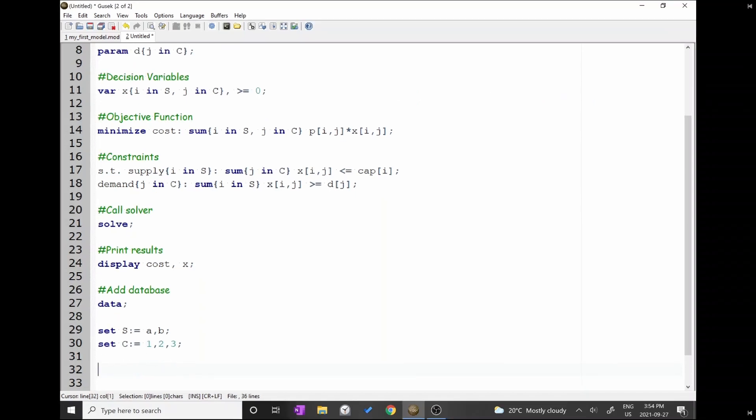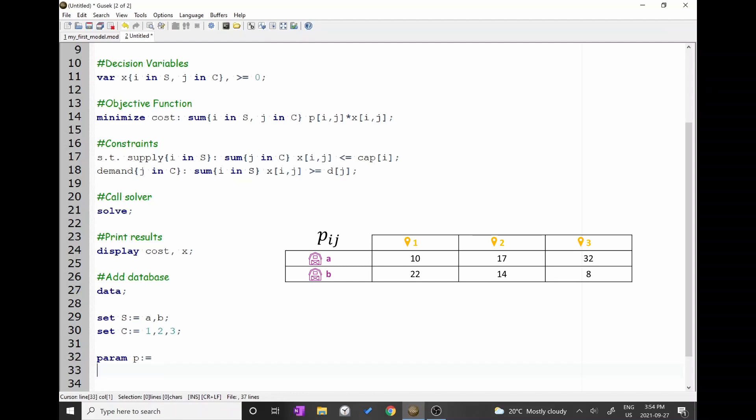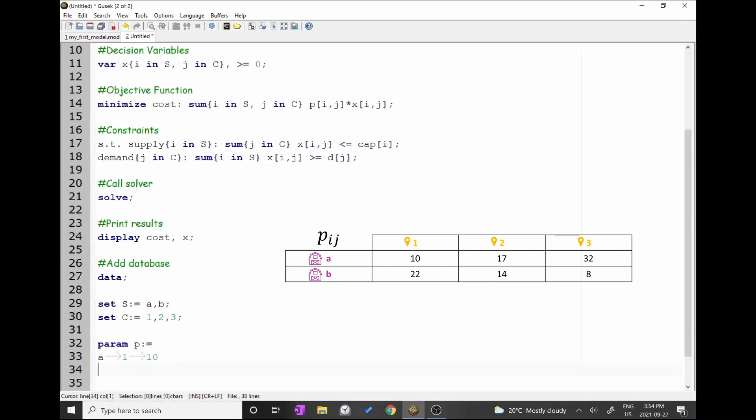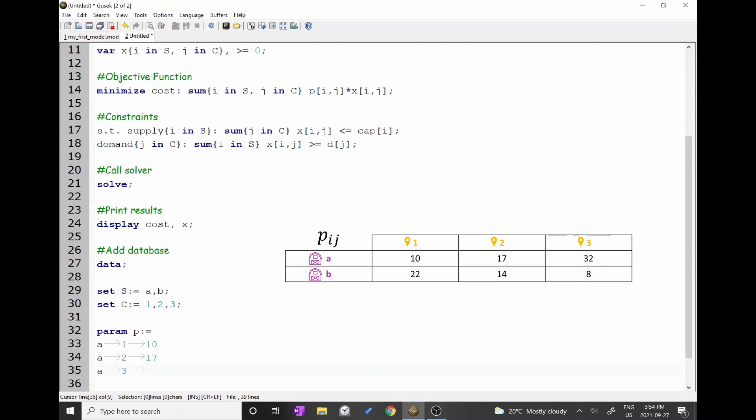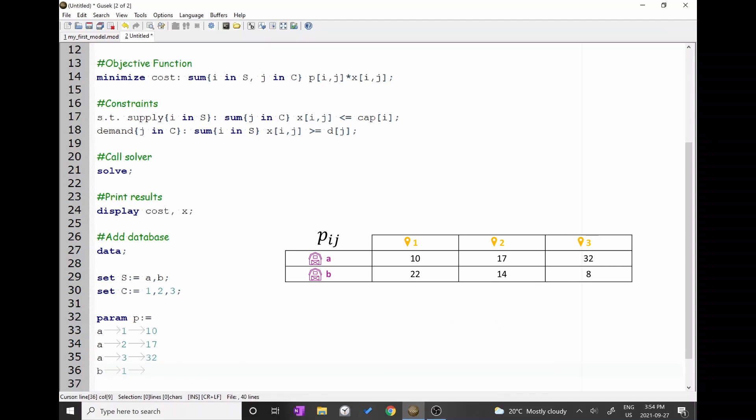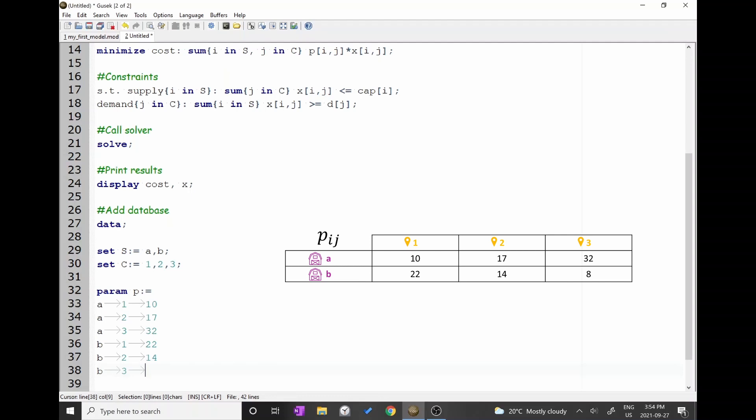Now, let us declare the values of parameter pij. Remember that pij has two indexes, i and j. This means that we need to specify the i's and j's. Type param p, colon, equal, then press enter and go to the next line. As you can see in the table, from A to 1, the cost is 10. So, type A, press tab, type 1, press tab, and write 10. You can get the gray arrow by pressing tab. Let me type the other costs. After entering all the pijs, I need to add a semicolon.